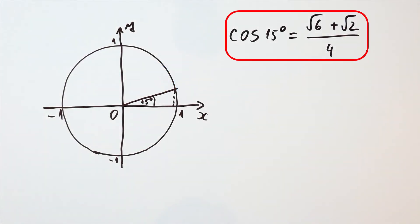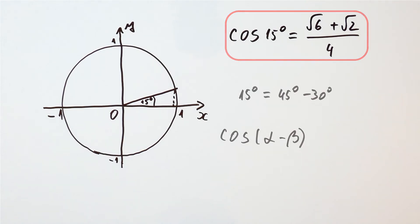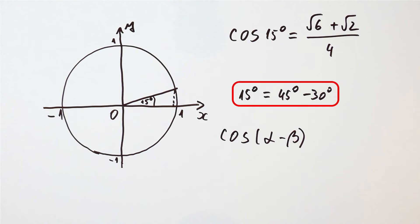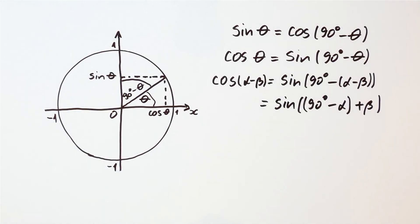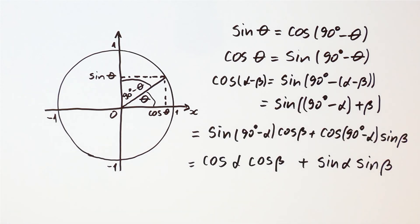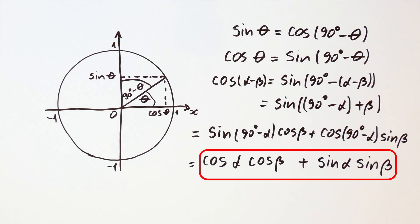We started by recalling what the cosine of 15 degrees is. However, if we don't know that, we can use that 15 degrees is equal to 45 degrees minus 30 degrees, which was the motivation to obtain the formula for the cosine of alpha minus beta. Then we said that the cosine of alpha minus beta is equal to the sine of 90 degrees minus alpha minus beta, which is equal to the sine of 90 degrees minus alpha plus beta. So we used the formula for the sine of the sum of two angles from the previous video, which gave us the formula for the cosine of alpha minus beta.